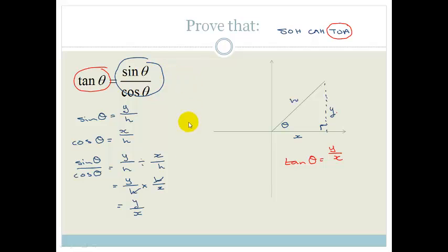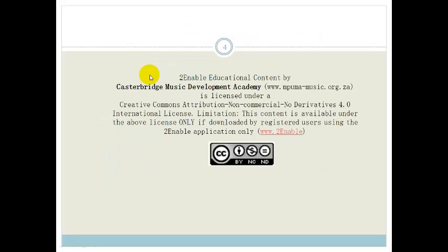So therefore, you can now use this identity that tan theta is equal to sin theta over cos theta in different examples. And this is called the quotient identity. Grade 11s, you need to not only be able to understand this and know this and memorize it, but you also need to be able to prove it like I just did. Have a great day.